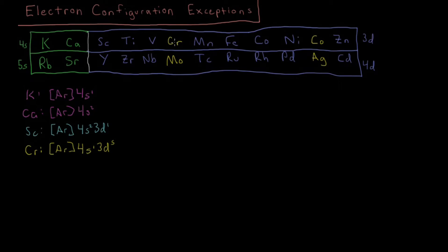We have 4S1, 3D5. Then similarly, we'd go on, we'd have 4S2, 3D5 at manganese, 3D6, 7, 8, and we might expect 3D9 at copper. So we'd have copper again being an exception where we have 4S1, 3D10. Then zinc rounding out this subshell at 4S2, 3D10.